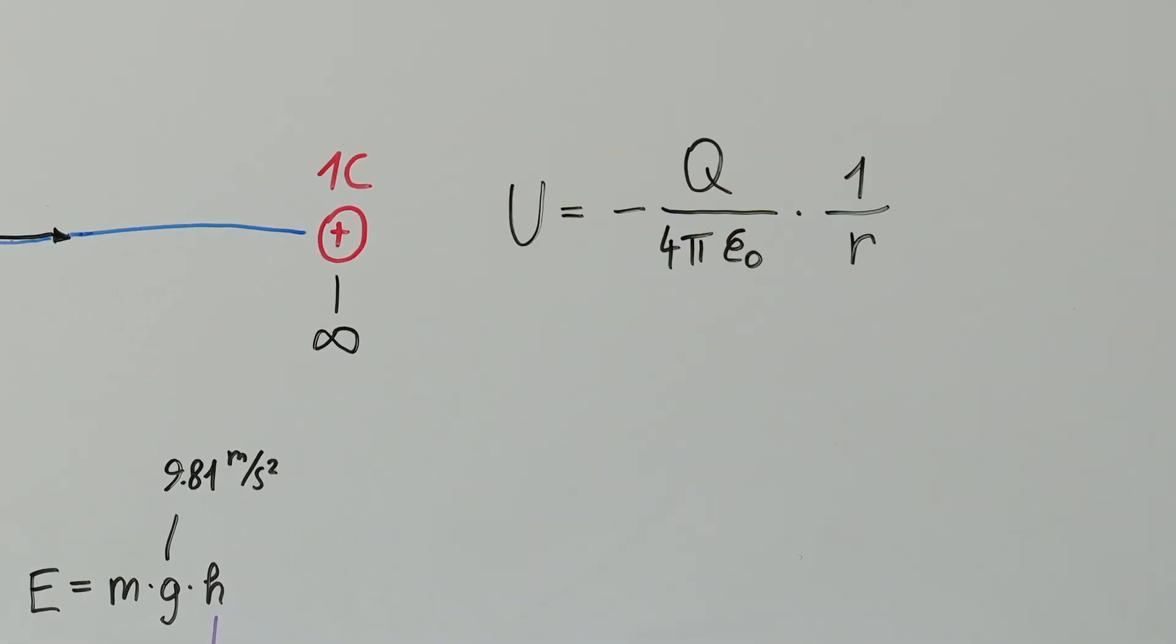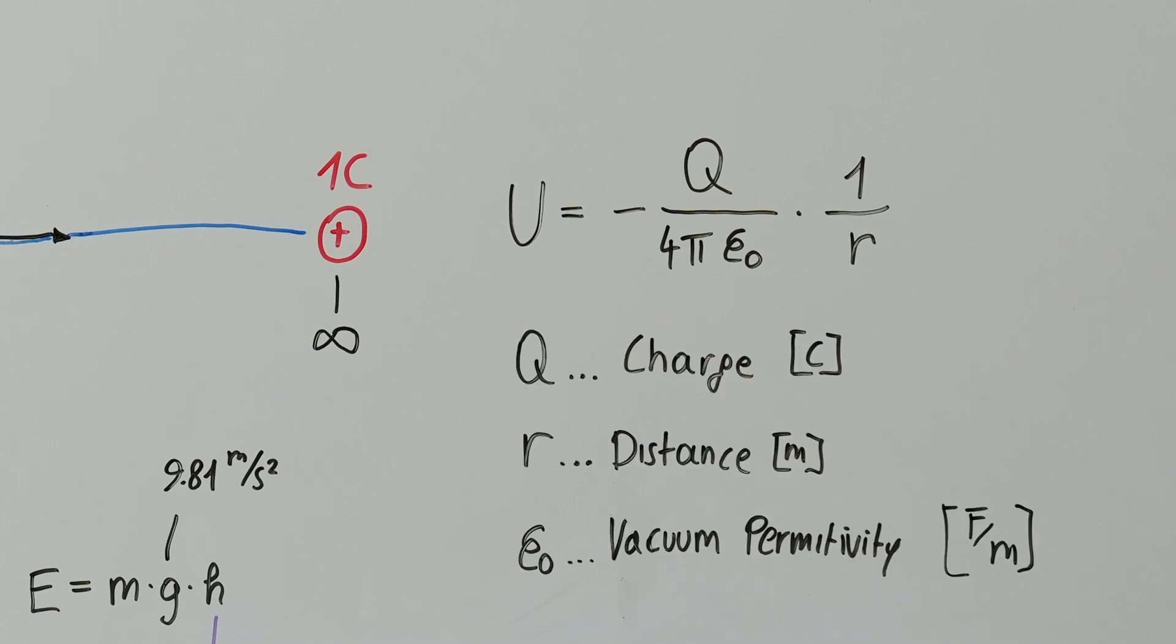For electric potential, the formula is U equals minus Q over 4 pi epsilon zero times 1 over R, where Q is the charge, epsilon zero is the vacuum permittivity, and R is the distance from the charge. The electric potential is given in volts. The higher the charge, the higher the electric potential. The smaller the distance to the charge, the higher the electric potential.